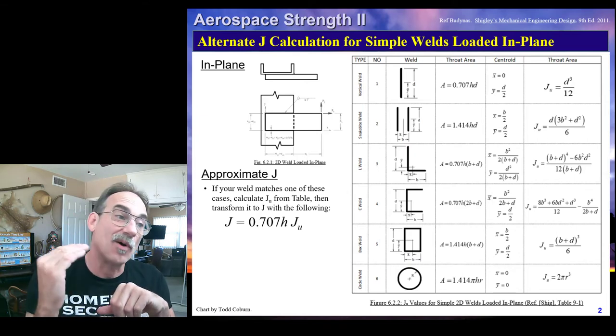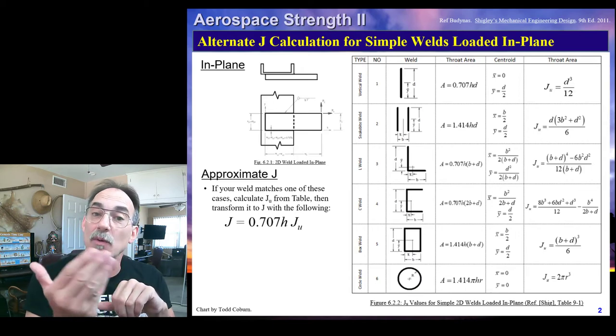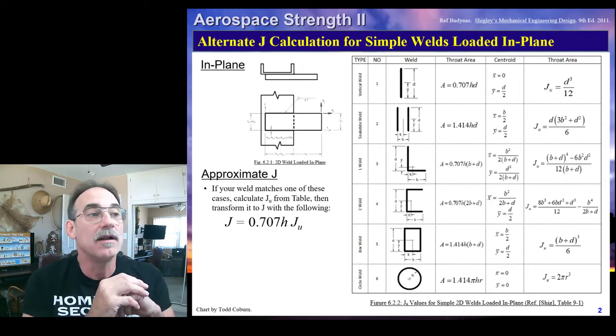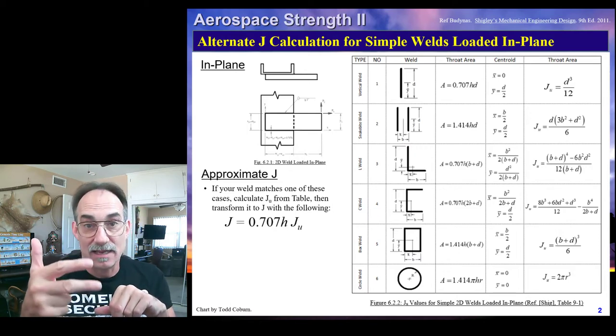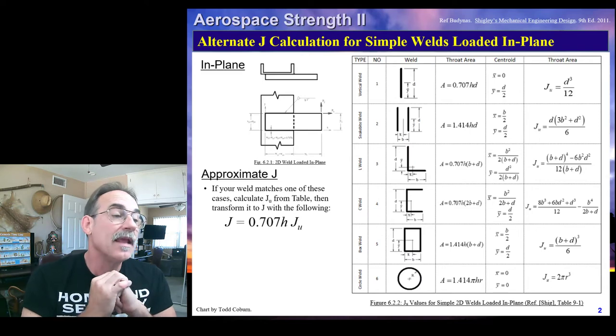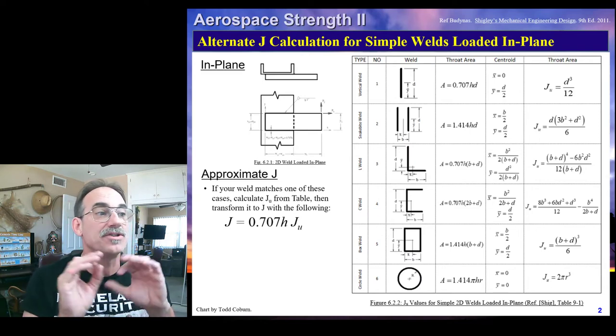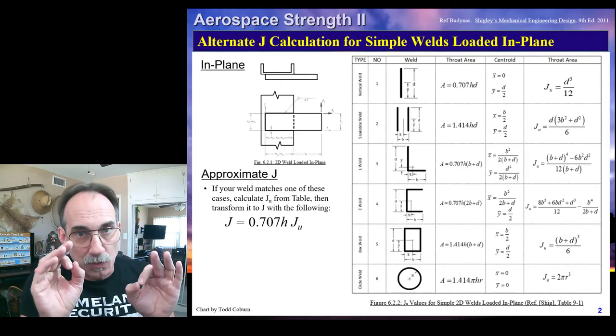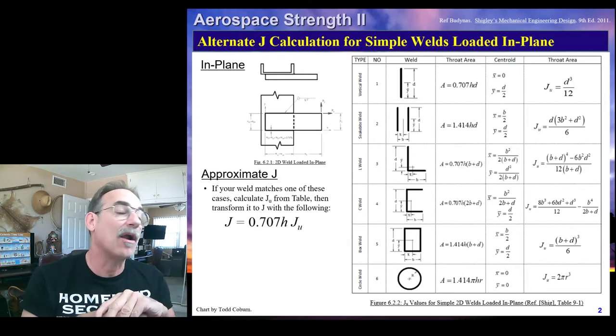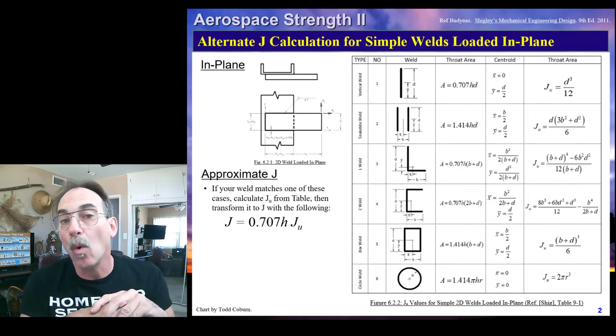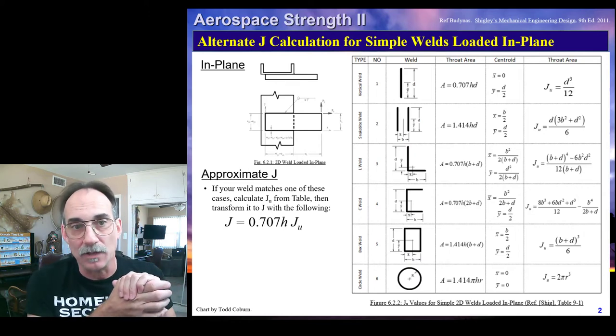Now, you can use the vertical weld for a horizontal weld as well by just re-identifying what your orientation of your axes are. You can use the snakebite weld as a dual horizontal weld, and you can use other orientations of these other welds. The trick is, and the place where students and industry professionals tend to mess this up, is not paying careful attention to how the origin is defined for where the X-bar and Y-bar are calculated to these welds.